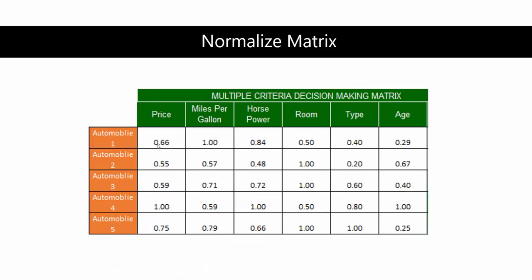Now we have a scale from zero to one for each one of our values. For price, automobile two would have the best (lowest) price. For miles per gallon, automobile one would be the best. Automobile four would be the best for horsepower, room, type, and age. This is your normalized matrix, and once we have it, we can move to the next step.